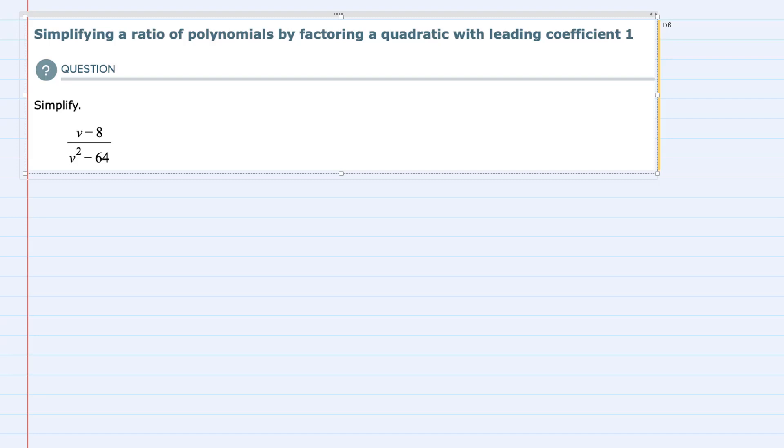In this video I'll be helping you with the ALEKS problem type called simplifying a ratio of polynomials by factoring a quadratic with leading coefficient 1.